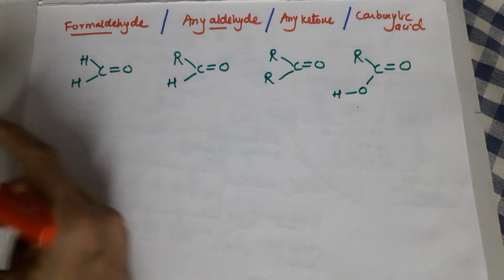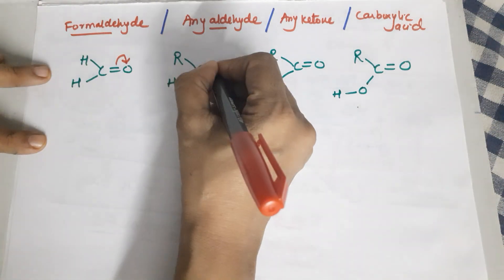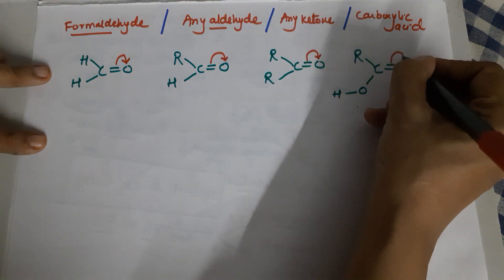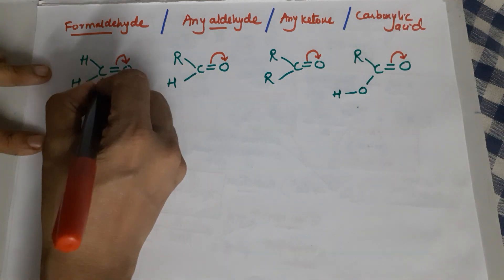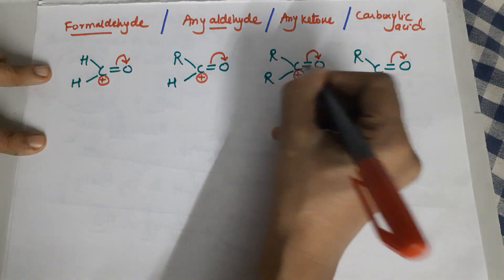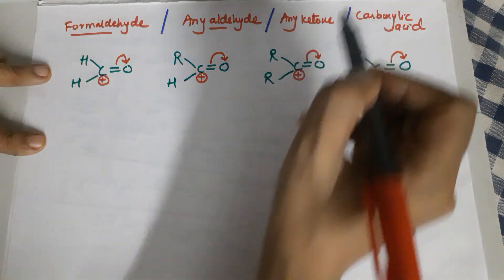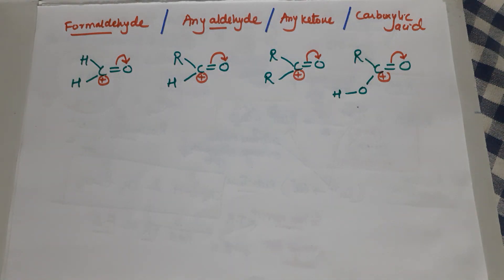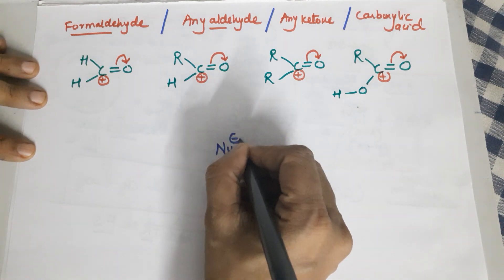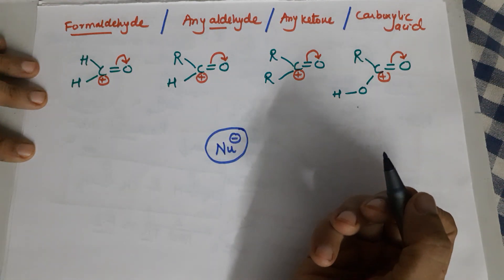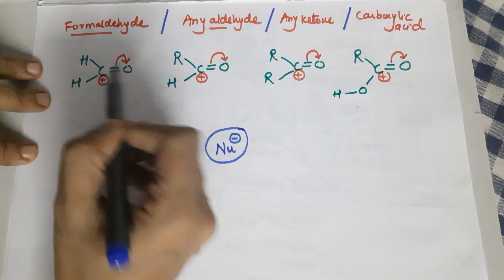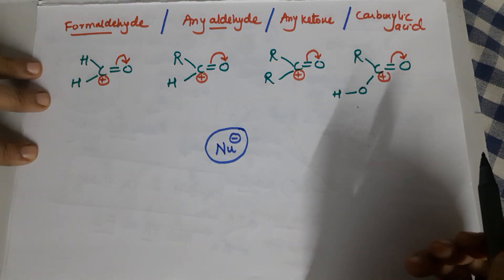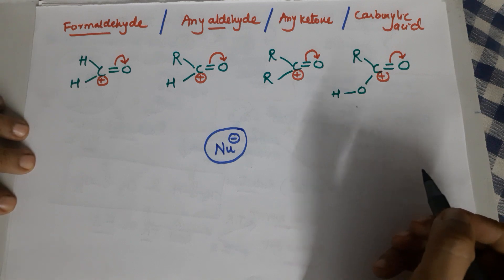In all of these compounds, there is a carbon double-bonded to oxygen. Oxygen pulls the pi electron cloud towards itself because pi electrons are loosely held. So all the carbons become positively charged — they become electron deficient — meaning all of them can attract a nucleophile. Now we are going to compare the reactivity: which compound will the nucleophile attack the fastest?